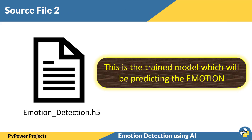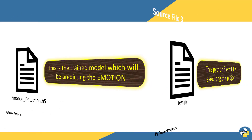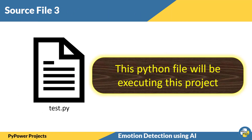The second source file is the emotion detection .h5 file. This .h5 extension is commonly used for trained models. The model which we have trained will be stored as emotion_detection.h5, and we will use this trained model for predicting the emotion. The third source file is test.py, the Python file we will use for executing this project.